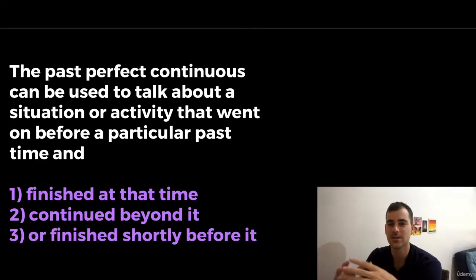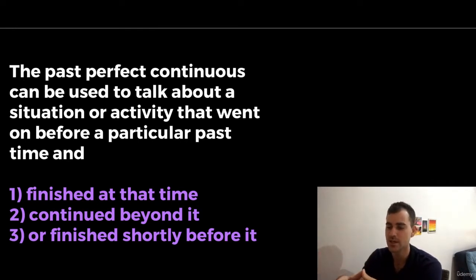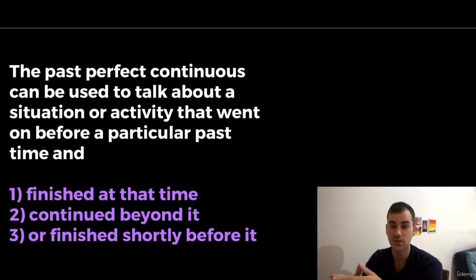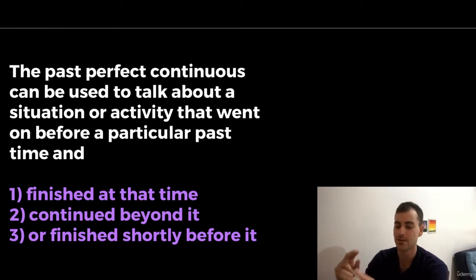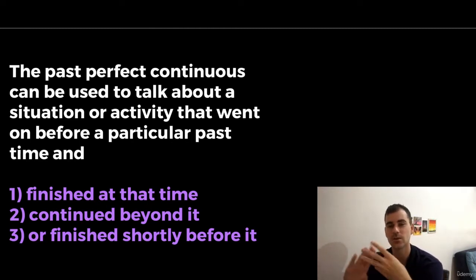So, how do we use this? When do we use this? Here are the basic rules. The past perfect continuous can be used to talk about a situation or activity that went on before a particular past time and either finished at that time, continued beyond that time, or finished shortly before that time. Those are the three main usages.